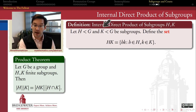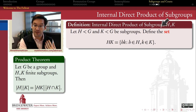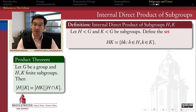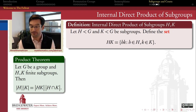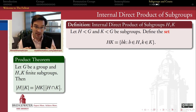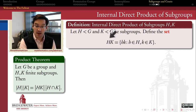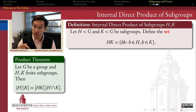The way it works is: if I have a group G and two subgroups H and K inside of that group, then I define the internal direct product of H and K as the set of all elements in G which I can make by multiplying an element of H times an element of K. Now the big caveat is that H times K, this internal direct product of two subgroups, is not always even a subgroup of G at all.